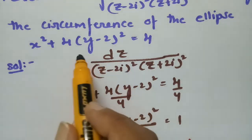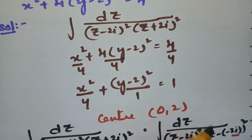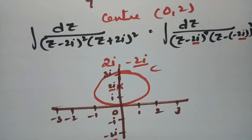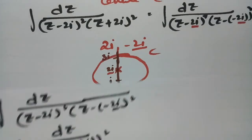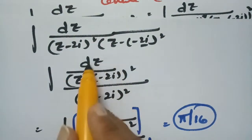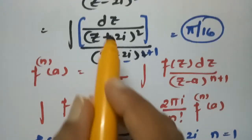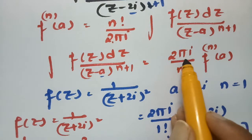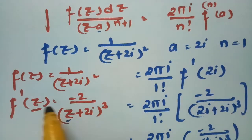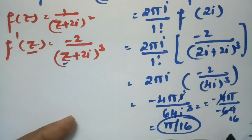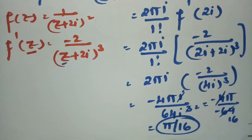To summarize: the integral is given, the ellipse has center (0, 2), and plotting shows minus 2i is outside and plus 2i is inside the contour. Since minus 2i is outside, it is sent to the numerator to form f(z). With n equals 1, a equals 2i, and f(z) equals 1 by (z plus 2i) squared, taking the derivative gives minus 2 by (z plus 2i) cubed. Substituting z equals 2i gives the final answer pi by 16. Thank you for watching — please practice and share with your friends.